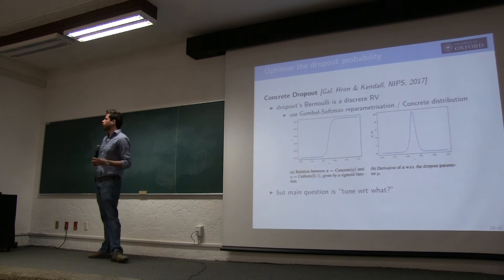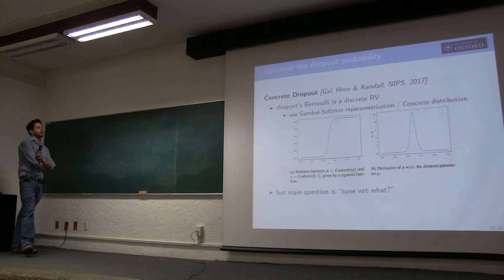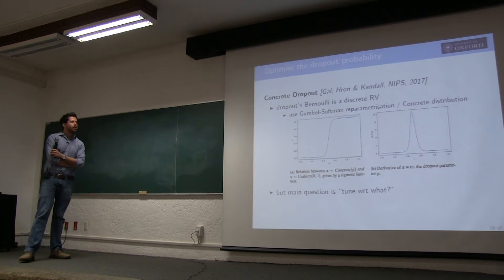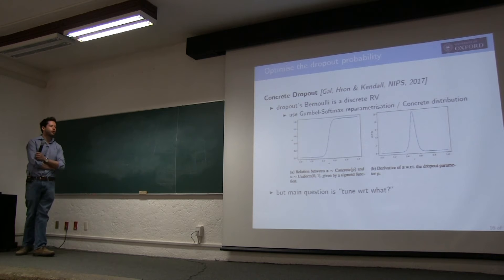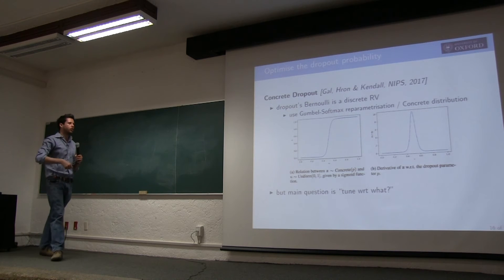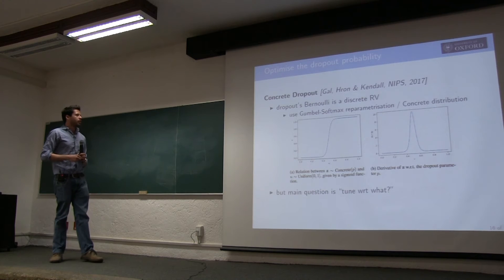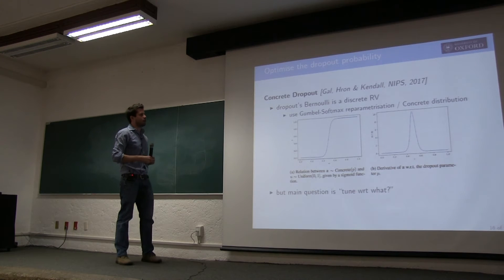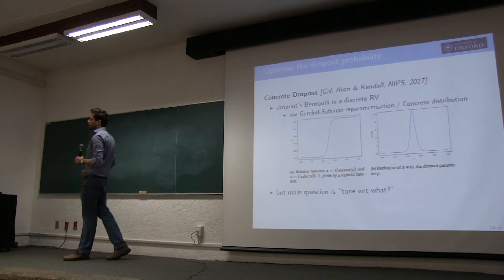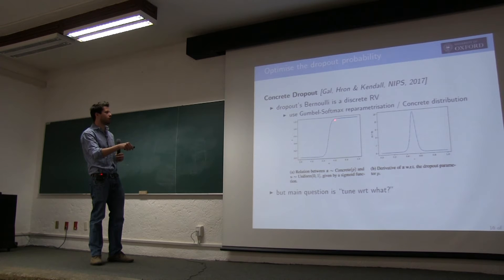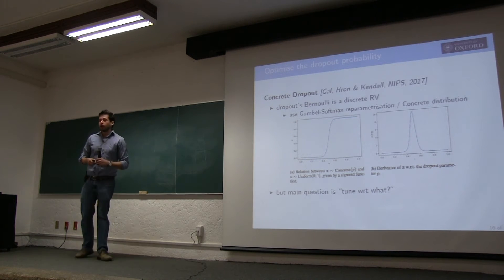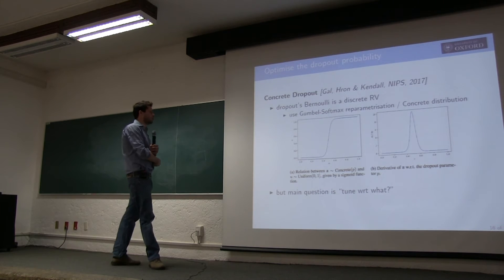How do we find the dropout probability p? We could try to differentiate with respect to p and optimize, but Bernoulli is a discrete distribution — taking the gradient gives 0. We could use the Gumbel-Softmax (concrete) distribution, a relaxation of the discrete distribution that is differentiable. But optimizing that directly doesn't work either, because the optimal p will just be 0 — don't do dropout, just overfit the data.